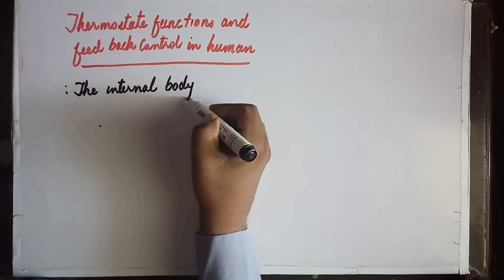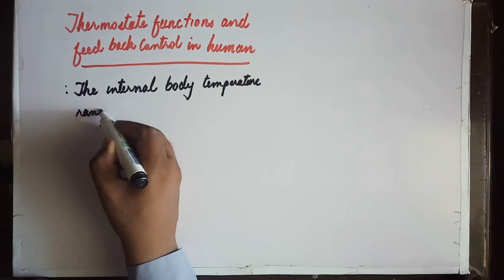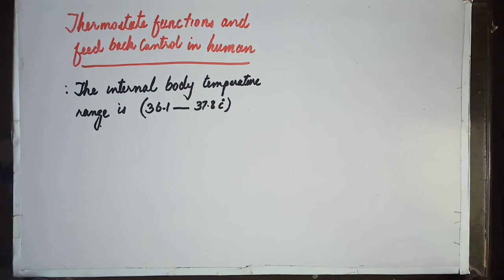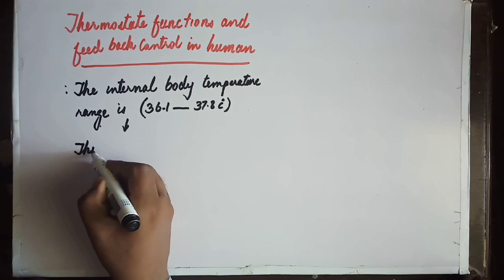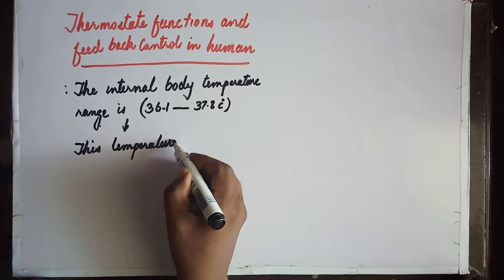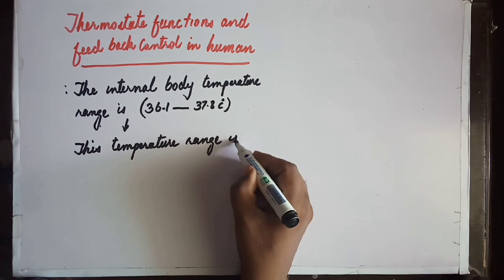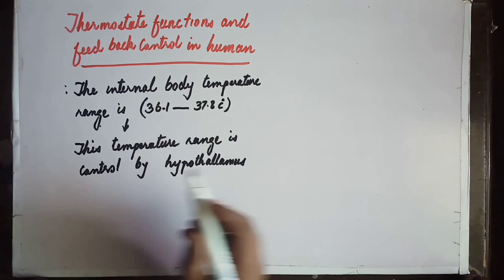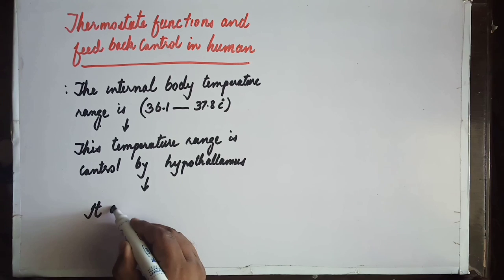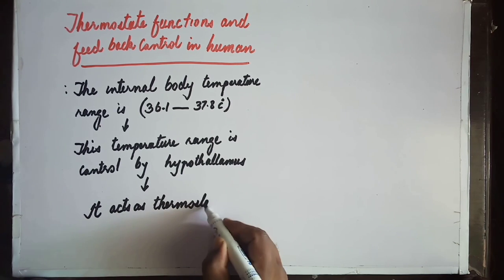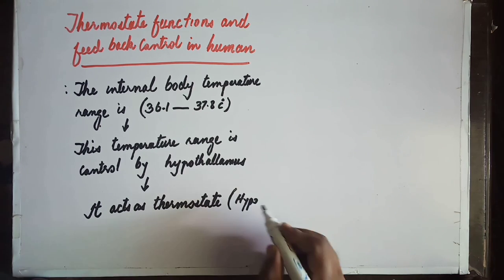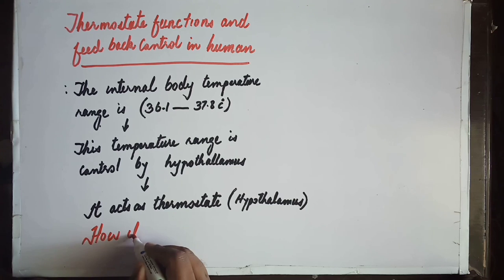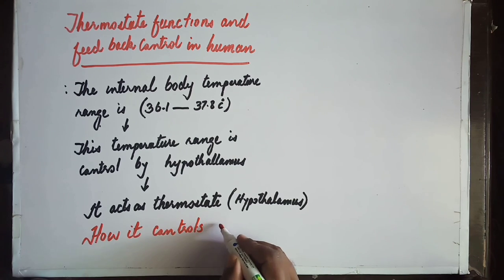The internal body temperature range is approximately 36.1 to 37.8 degrees. This is controlled by our brain. The temperature range inside our brain is controlled by the hypothalamus. Hypothalamus prevents variation in the body's temperature — it acts as a thermostat, meaning it stabilizes temperature. That thermostat is the hypothalamus.